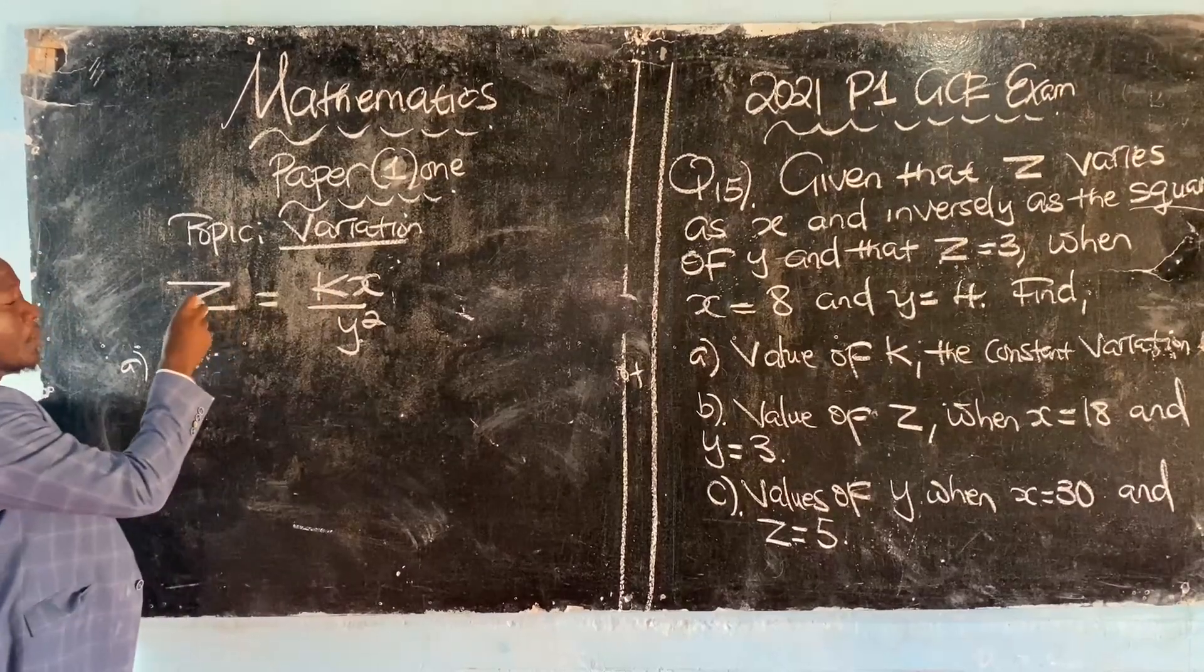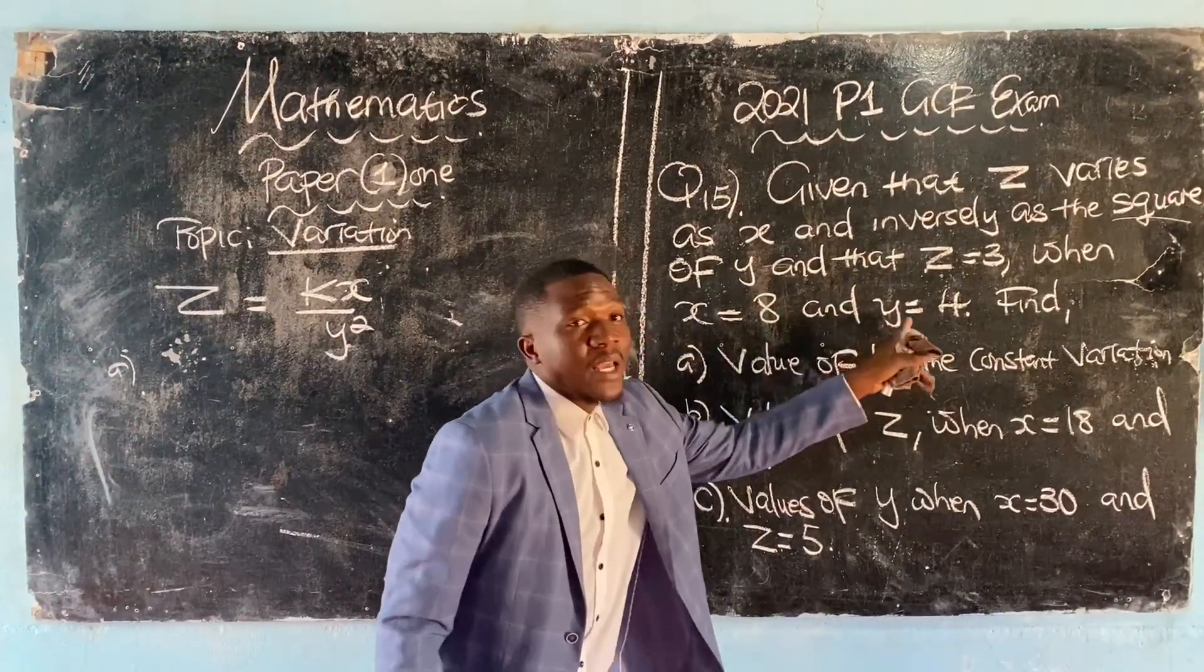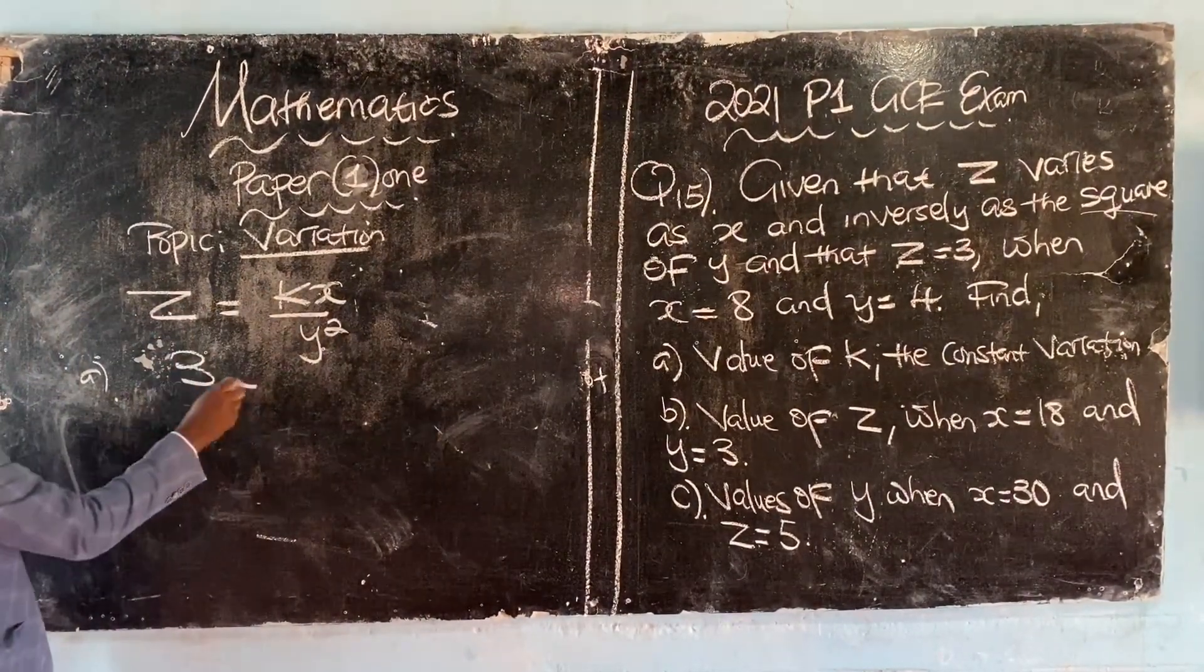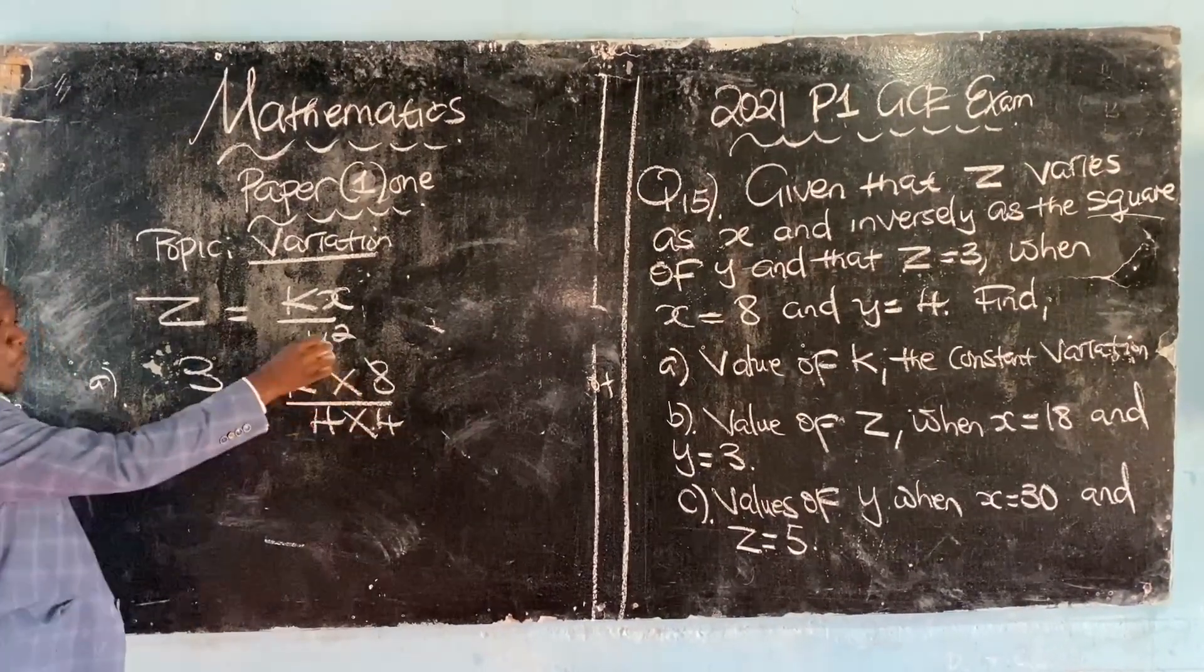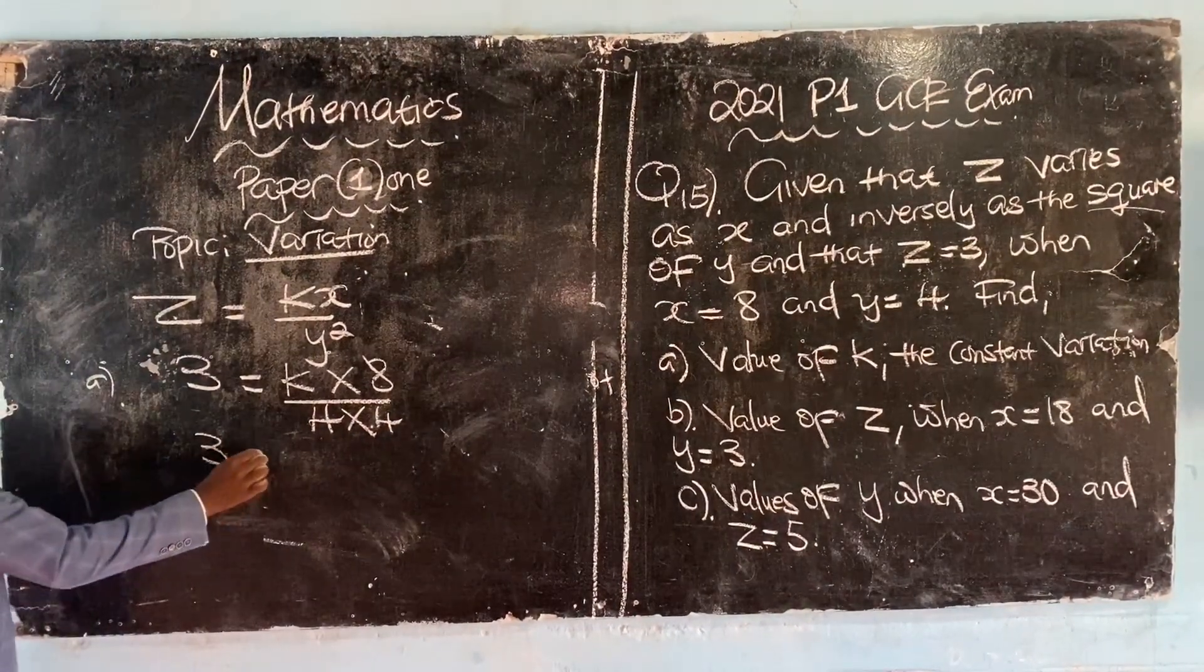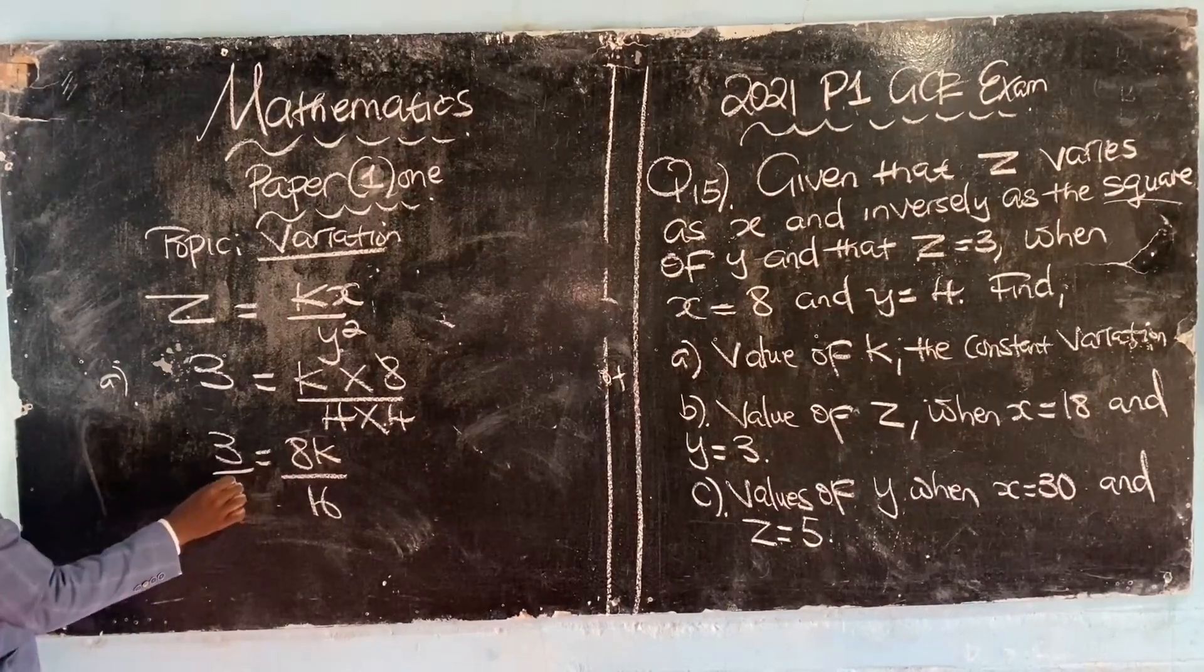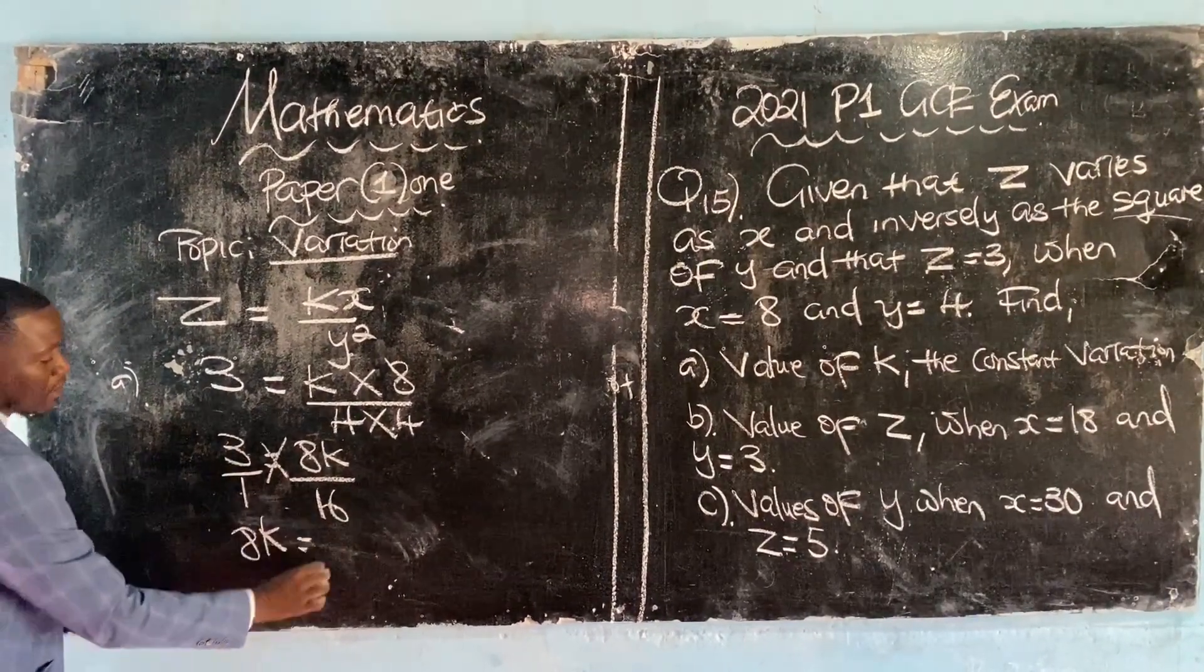To find k, we need the values of z, x, and y. z is 3, x is 8, and y is 4. So 3 equals k multiplied by 8 over 4 squared. This is 3 equals 8k over 16. Cross multiply: 8k equals 3 multiplied by 16.